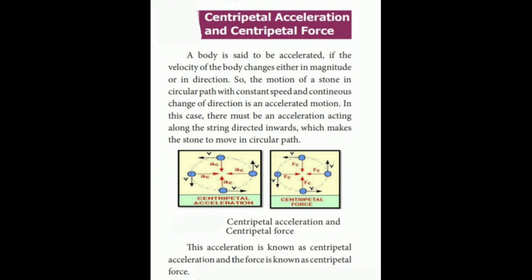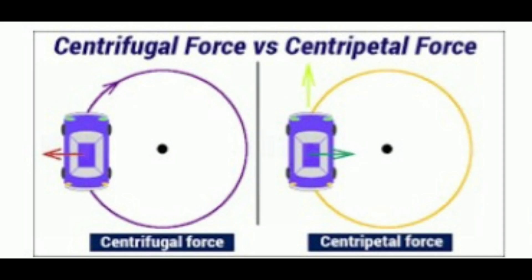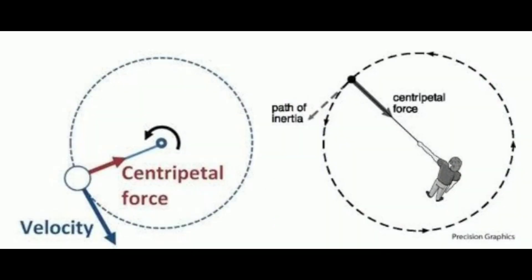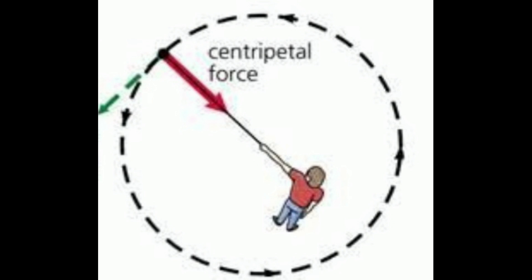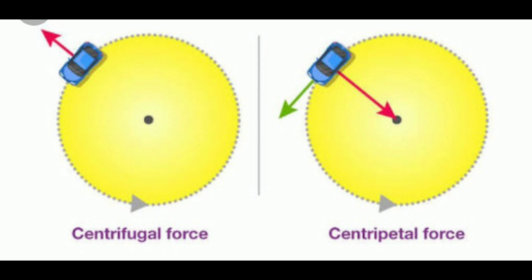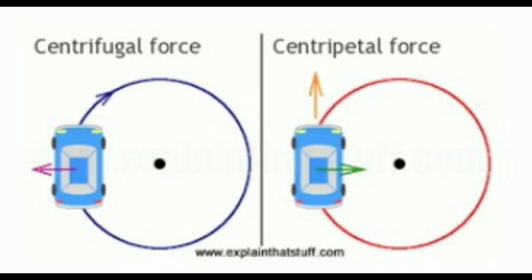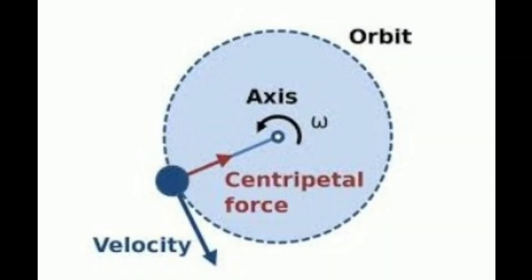Centripetal acceleration and centripetal force: A body is said to be accelerated if the velocity of the body changes either in magnitude or in direction. The motion of a stone in a circular path with constant speed and continuous change of direction is an accelerated motion. In this case, there must be an acceleration acting along the string directed inward, which makes the stone move in a circular path. This acceleration is known as centripetal acceleration and the force is known as centripetal force.